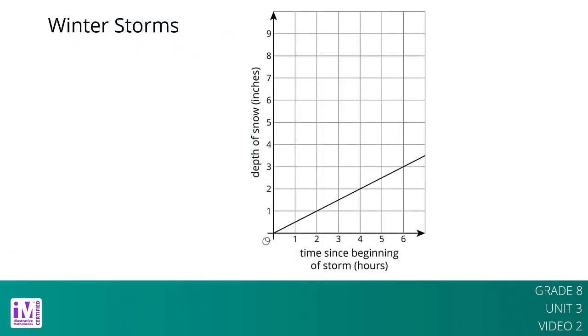Now, let's consider this situation. During an early winter storm, the snow fell at a rate of 1 half inch per hour. Let x be the time since the beginning of the storm and y be the depth of the snow. We can see the rate of change, 1 half, in both the equation that represents this storm, y equals 1 half x, and in the slope of the line representing the storm.